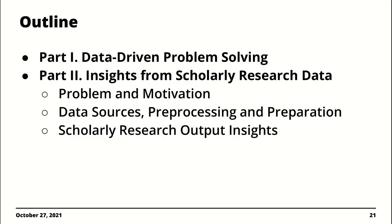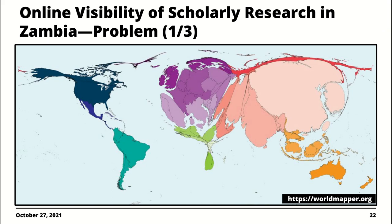Moving into part two, I'll talk about work we've done in the scholarly research field to understand problems associated with research output at the University of Zambia and Zambia in general. The motivating factor is the low online visibility of research in Zambia and indeed across Africa. If you go to places like World Mapa, they visualize just how bad the landscape is — certain exceptions exist at the tip, like South Africa and some countries in the northern part of the continent, but for the most part visibility is quite low.